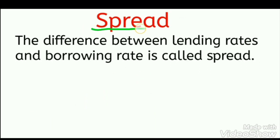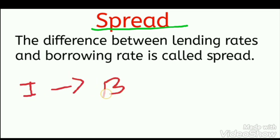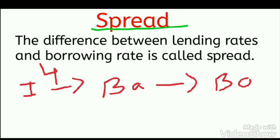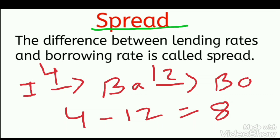The third term is spread — the difference between the lending rate and the borrowing rate. For example, if the bank is paying me 4% interest per annum on deposits and receiving 12% interest on loans, the difference is 12 minus 4 equals 8%. This 8% is the profit to the bank, and that is what we call spread.